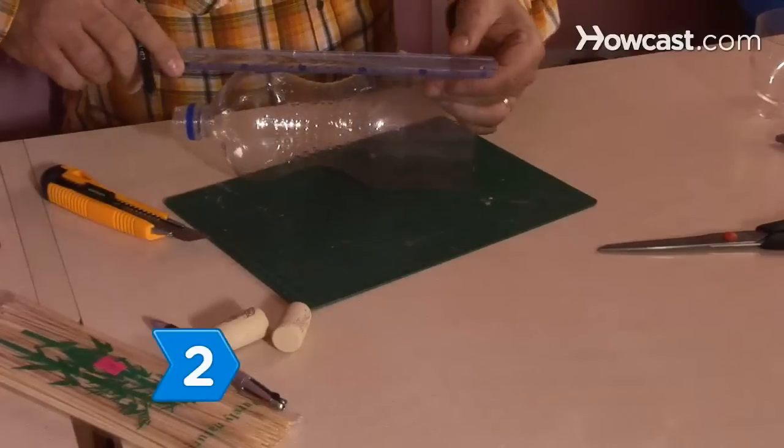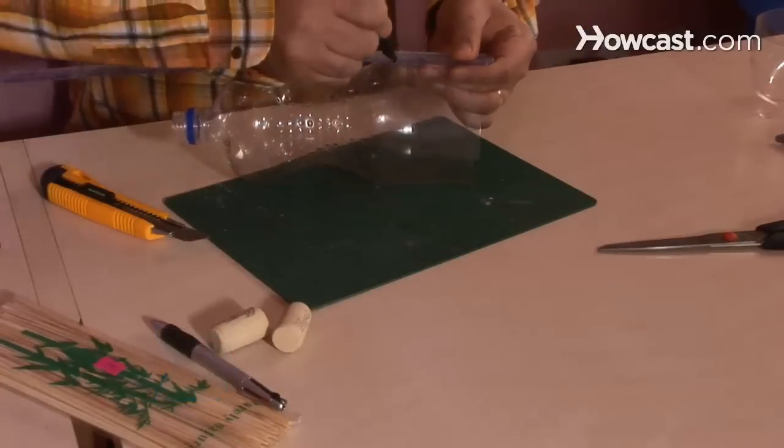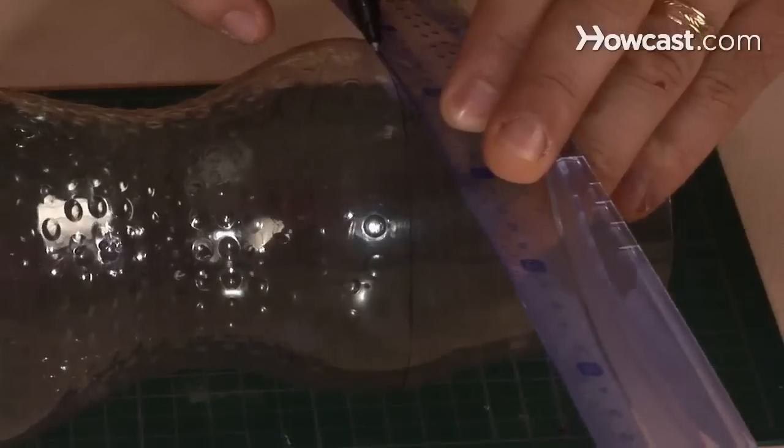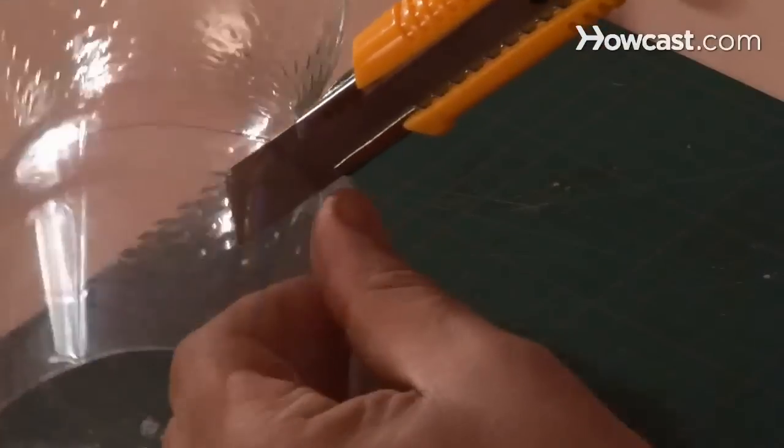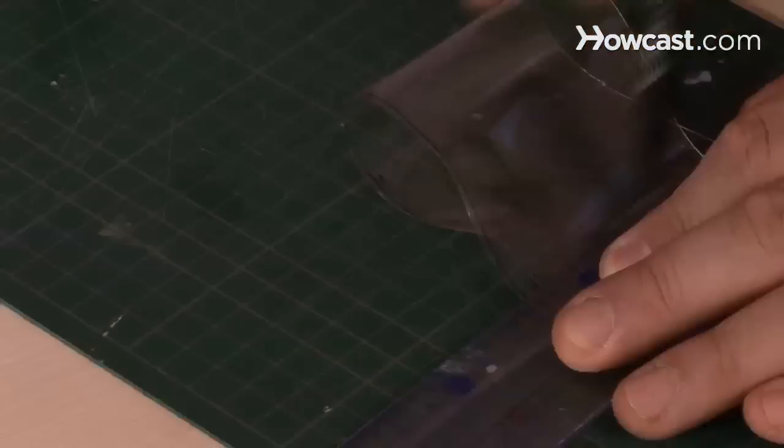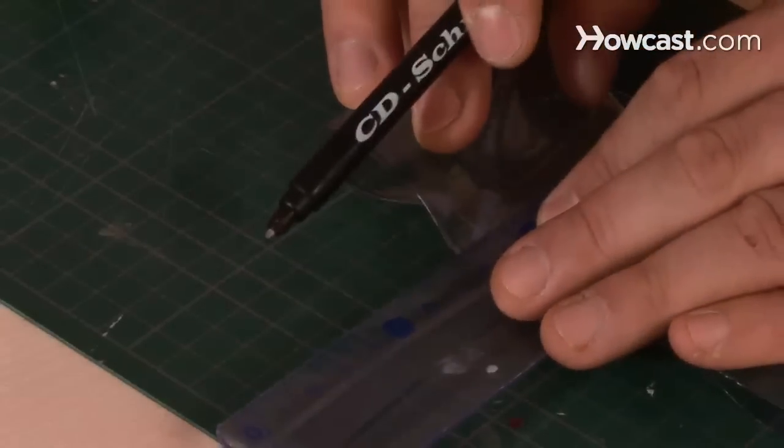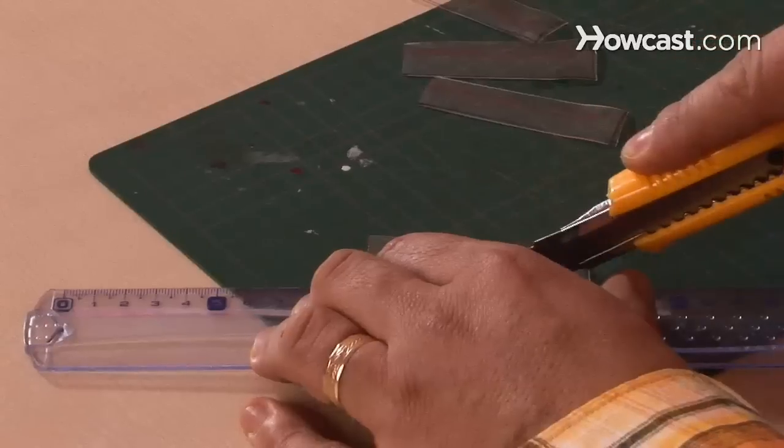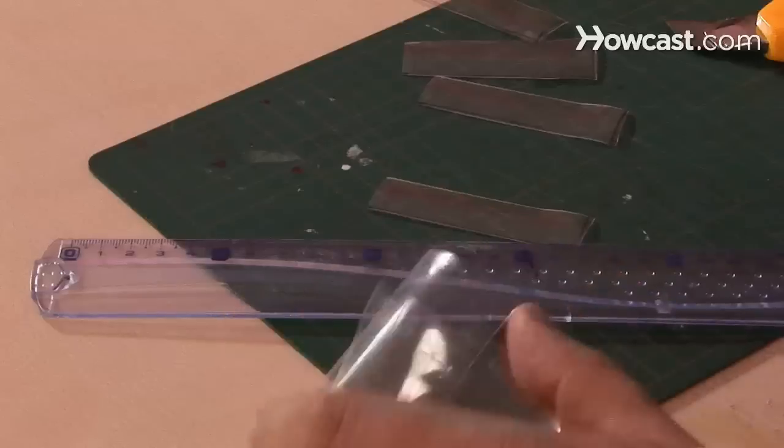Step 2. Use the same method and cut an 8 centimeter wide section from the middle of the bottle. Measure, mark, and cut 4 2 centimeter wide strips from the center section and use scissors to cut the strips in half so you have 8 strips that measure 4 centimeters by 2 centimeters.